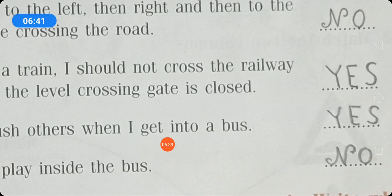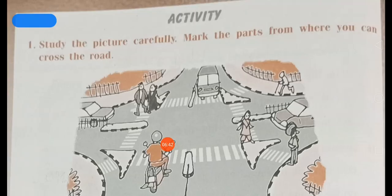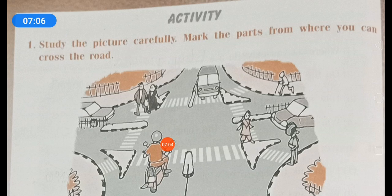Some children play inside the bus — no. Activity: Study the picture carefully and mark the parts from where you can cross the road. You should cross a road through the pavement or footpath, or at the zebra crossing. You should follow the zebra crossing and walk on the pavement or footpath.